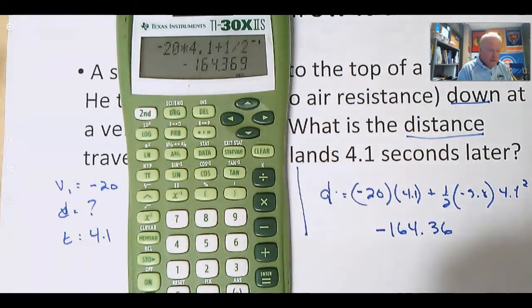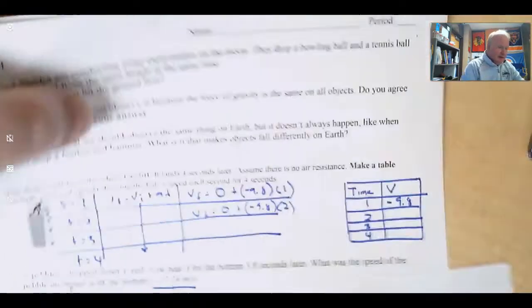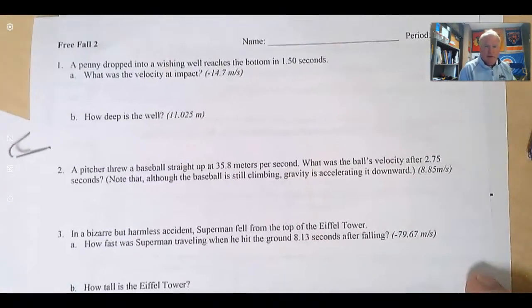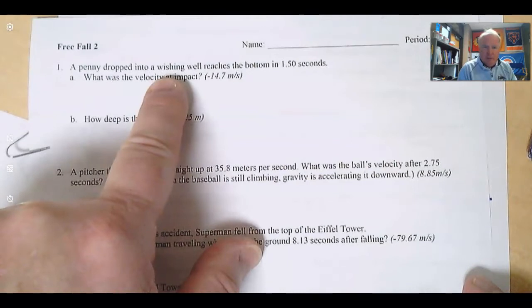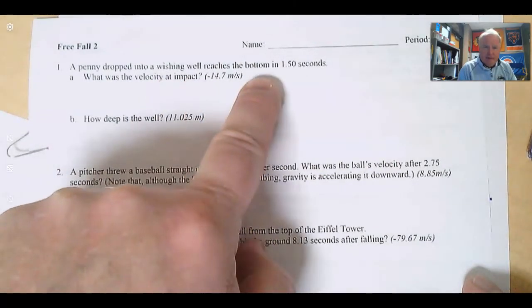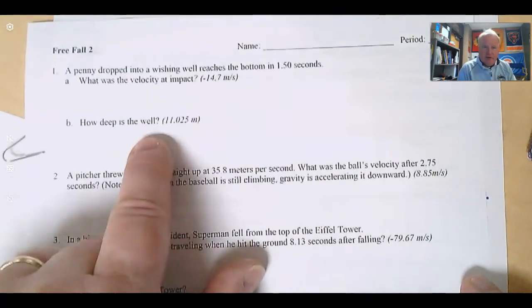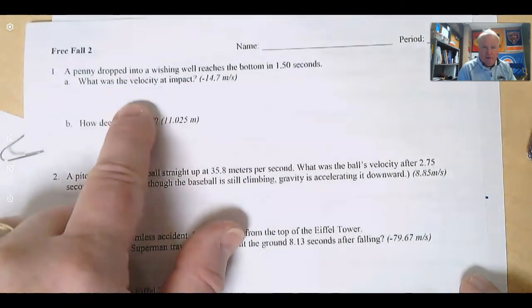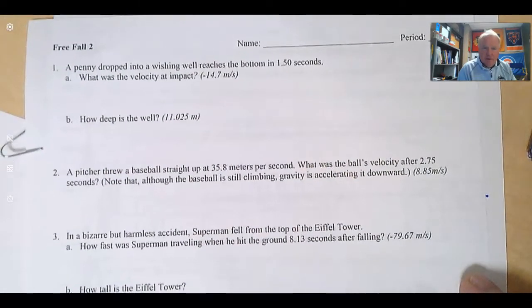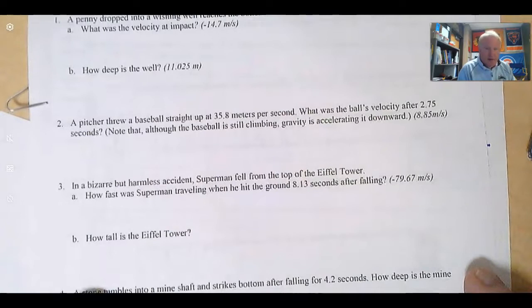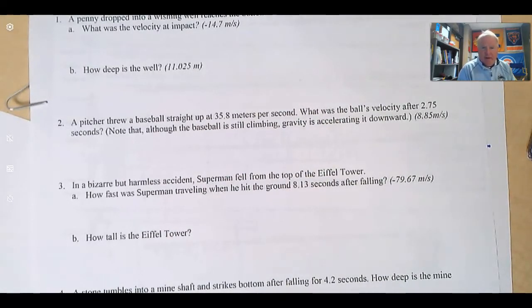Right now there is a new sheet that we're going to be handing out. My expectation is that if you have time, you're working on this. Here we have a penny dropped from a wishing well. It hits the bottom 1.5 seconds later. It asks for the velocity and the distance. So you'll use the velocity equation here, the distance equation here. See if we can get through at least half because we've got some work to do on Tuesday on weight. Remember, Wednesday we'll have the day for the study guide, and then Friday we'll have the unit 2 test. Hope you guys are all well, and come see me later in the day if you need to ask me any questions.